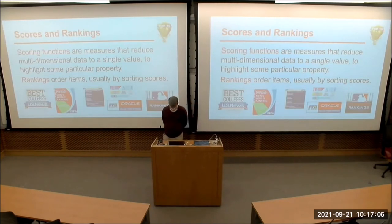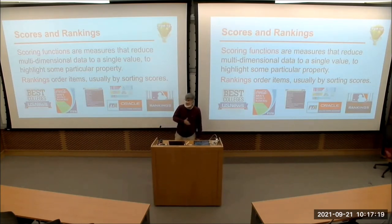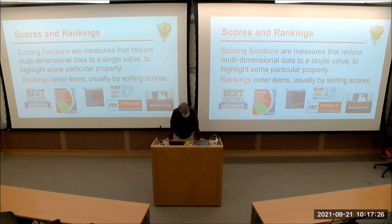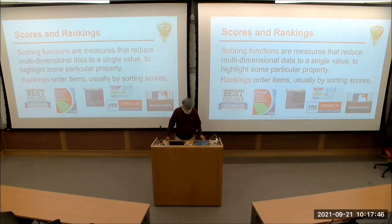What I'd like to talk about now is the topic of coming up with scores and rankings. A scoring function is a measure that reduces a multidimensional data set down to a single value with the goal of highlighting some property. And a ranking is basically an ordering of items in your universe according to some kind of scoring function.